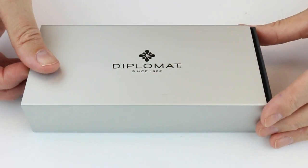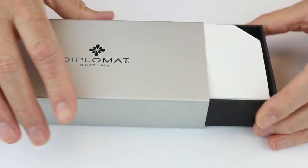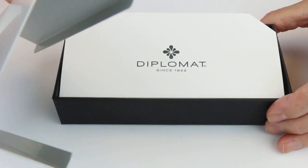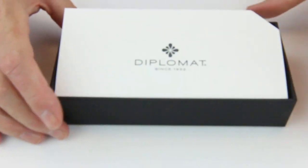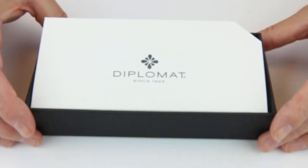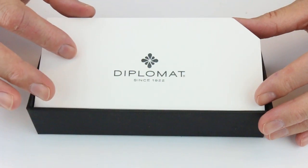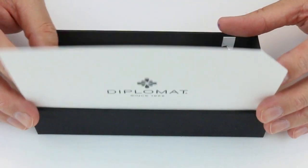This raw finish on the aluminum is a sleeve that slides off. You can see its U-shaped design with a cardboard box underneath. There's also a cardboard sleeve on the top with the Diplomat logo.